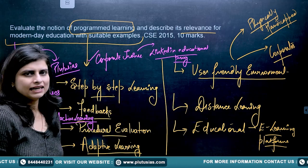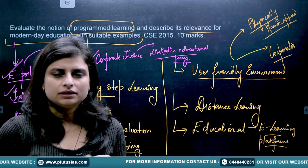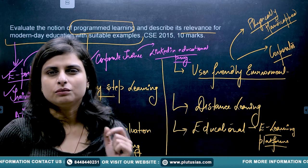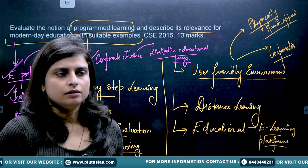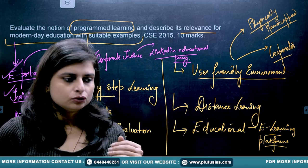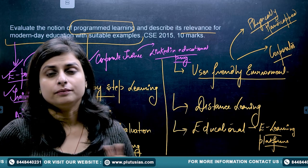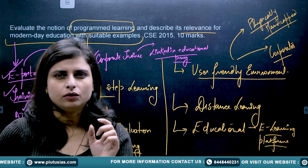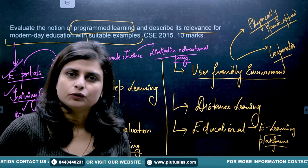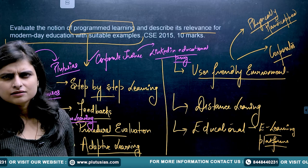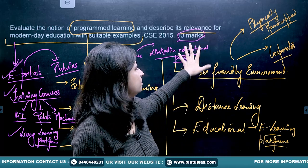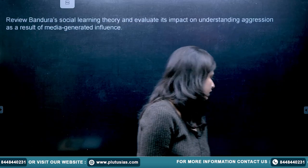This question was very different from the static portion, but they wanted to test your intellect — whether you are able to understand and interpret programmed learning. For example, if you want kids to learn a language, if you constantly play sounds and systems in front of a child, the child will learn through listening and observation. That is again programmed learning. Since it was a 10-marker question, this much should be decent enough to attempt.